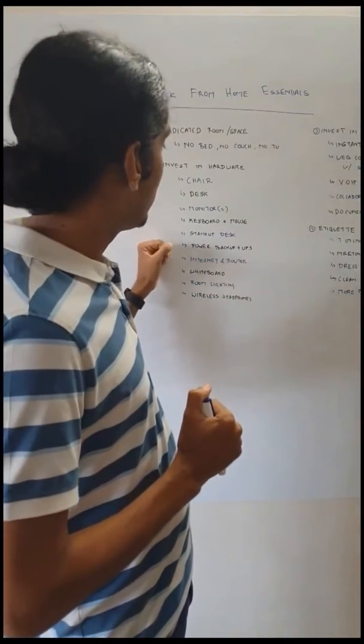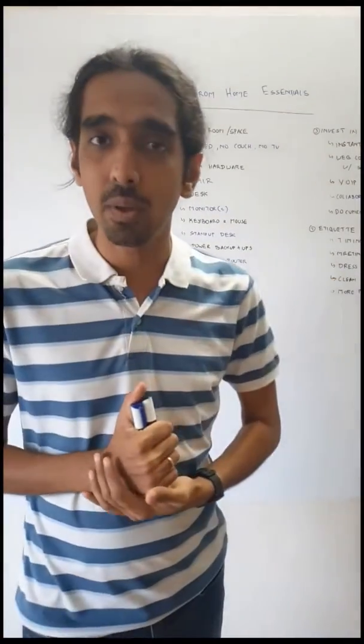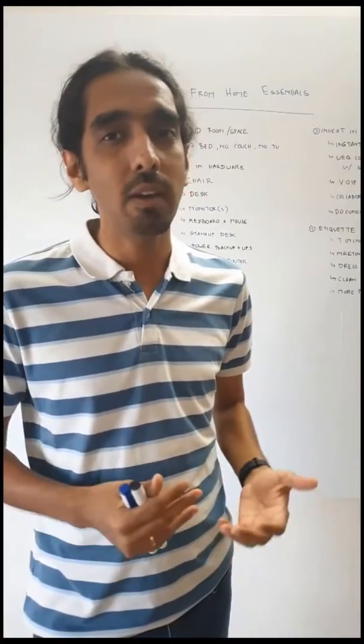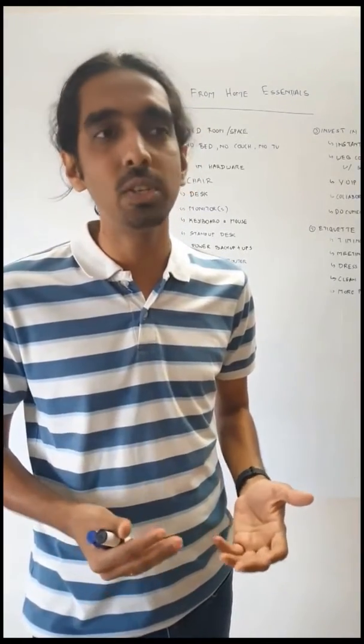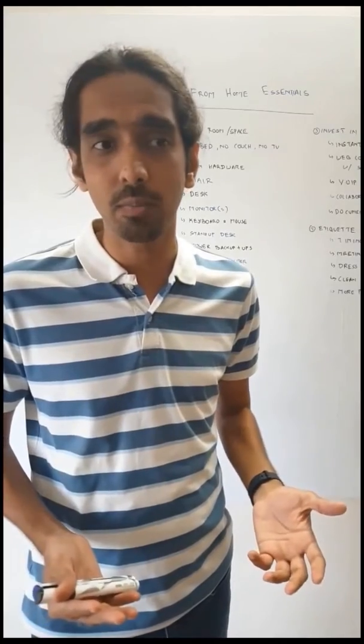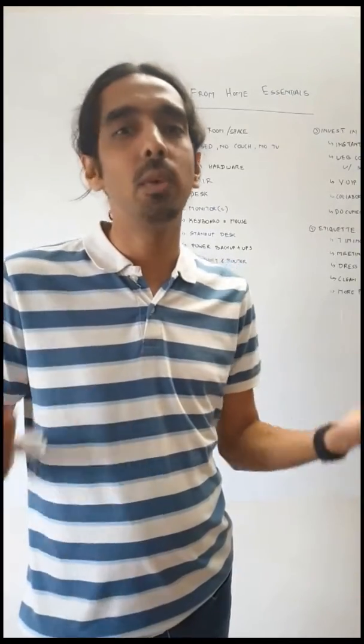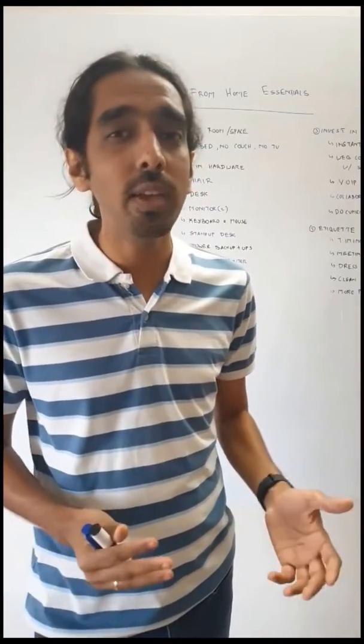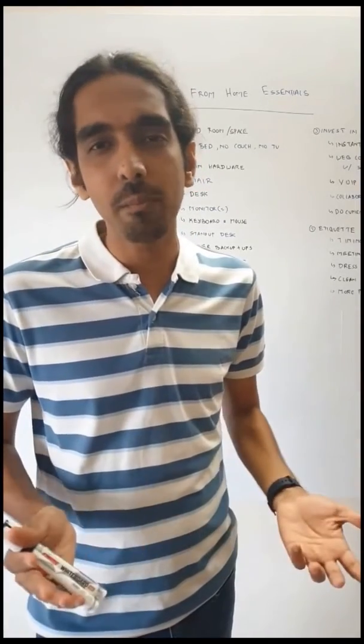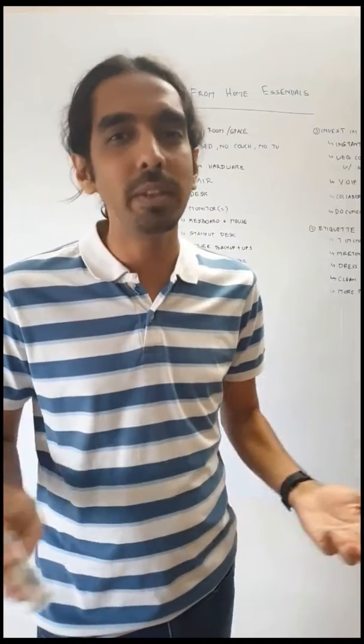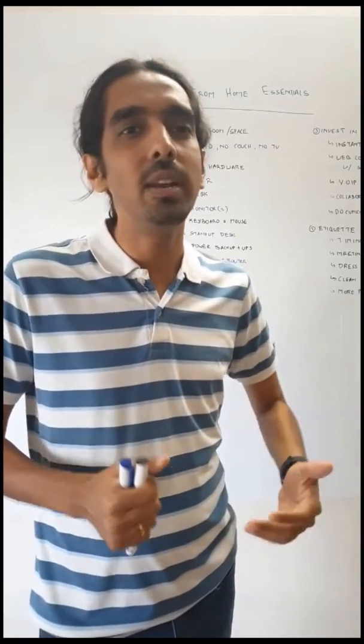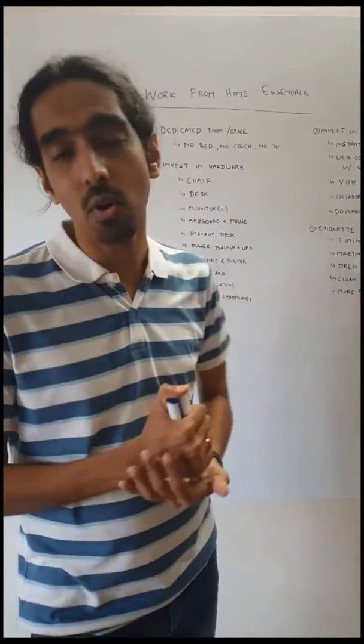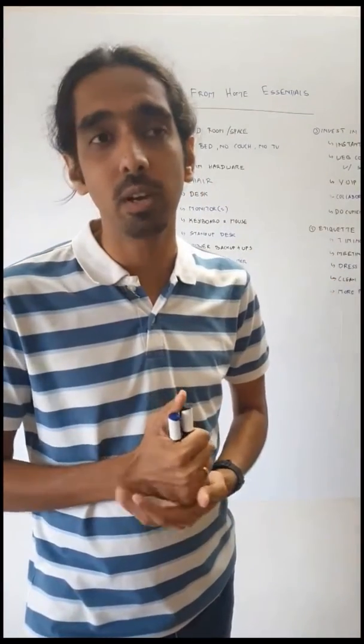Next, you want to make sure that you have power backup. Now, if you're living in an apartment like me, the apartments and other buildings have their own kind of power backup which is not uninterrupted power supply but it kicks in when there's a power outage. And with the summer coming in, many cities will face 2-4 hours of power outage sometimes, maybe 6 hours sometimes. So you need some kind of a power backup and an uninterrupted power supply for being able to work from home effectively.